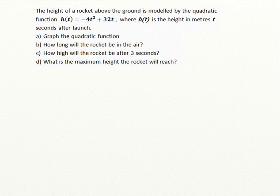The word problem says the height of a rocket above the ground is modeled by the quadratic function h at t equals negative 4t squared plus 32t, where h at t is the height in meters, t seconds after the rocket has been launched. The question asks us to graph the quadratic function, and then asks: how long will the rocket be in the air? How high will the rocket be after 3 seconds? And what is the maximum height the rocket will reach?